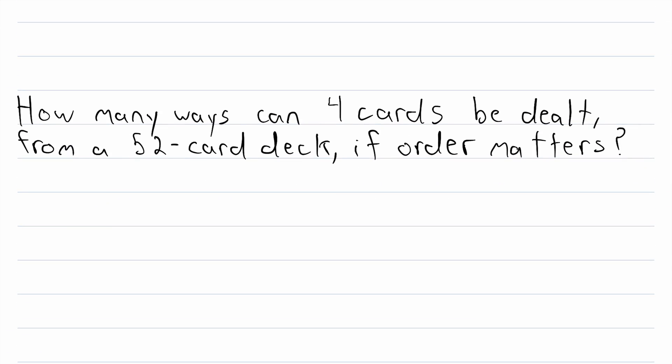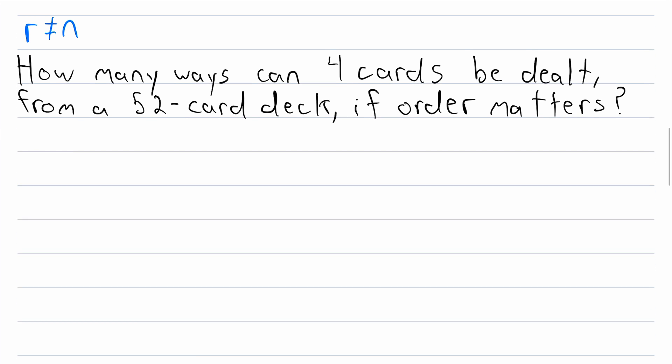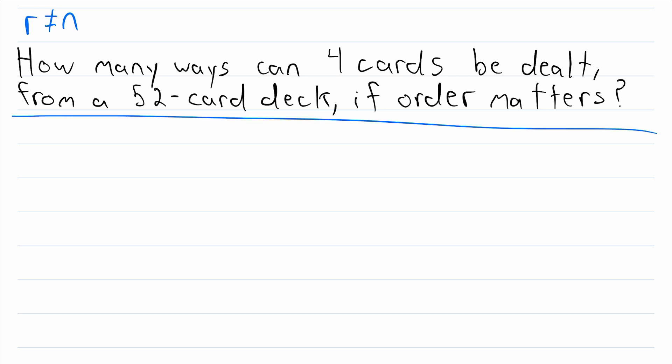Now let's check out the other possibility that r is not equal to n. This is a situation where we want to know how many ways we can order some objects from a greater collection. So here's a question about that: How many ways can 4 cards be dealt from a 52-card deck if order matters? So we're assuming that the order in which the cards are dealt is important, which means we're trying to count permutations. Because remember, in a permutation, the order of the objects matters. So again, let's just try using logic to answer this question.